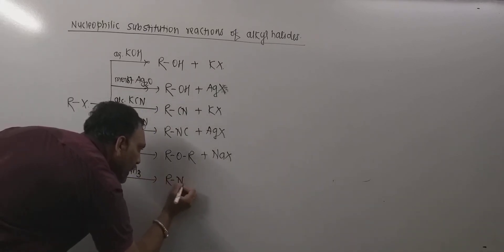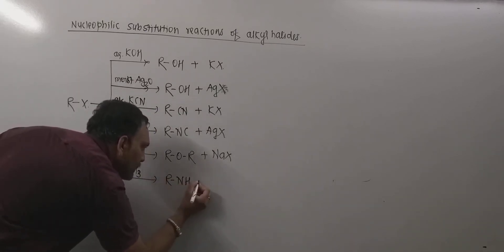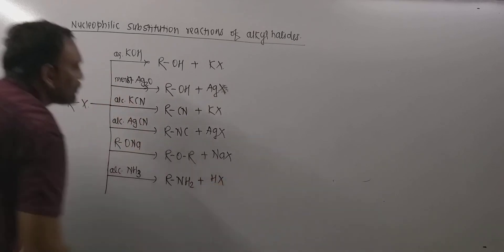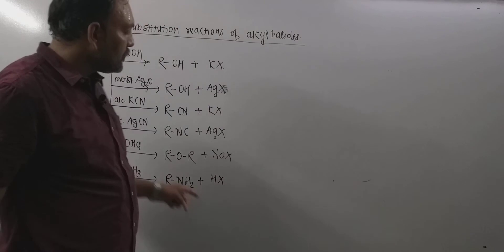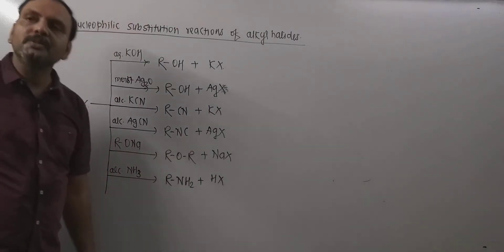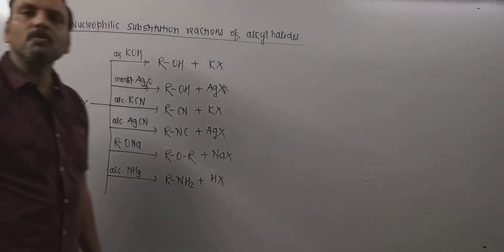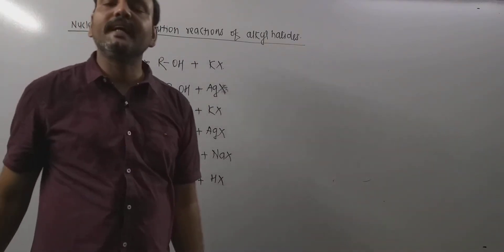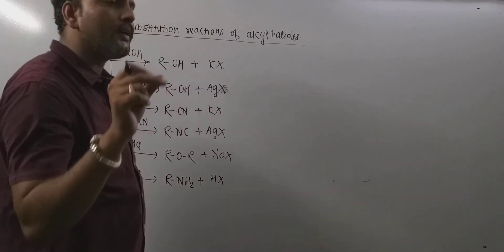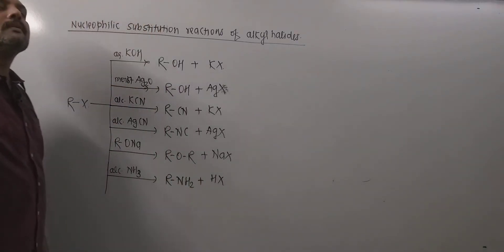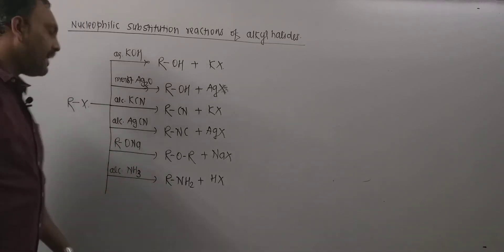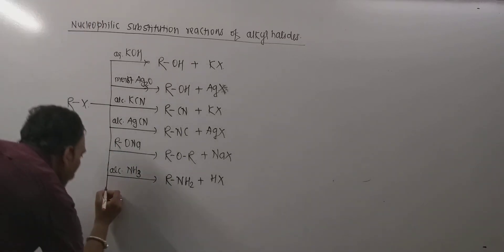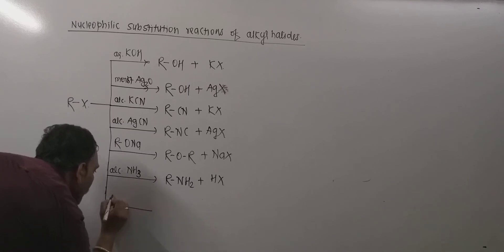When alkyl halides are treated with alcoholic ammonia (NH3), they react with ammonia producing primary amine — that is RNH2 — along with HX. But remember, this reaction doesn't stop here; it is a continuous reaction giving all possible amines: primary, secondary, and tertiary amines, along with quaternary ammonium salt. In order to get a good yield of primary amine, we need to take ammonia in excess.